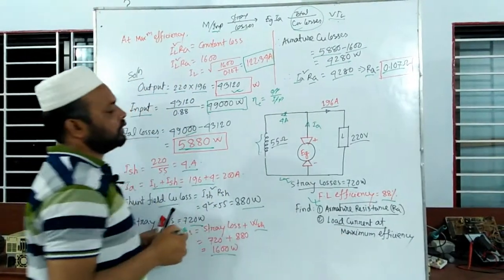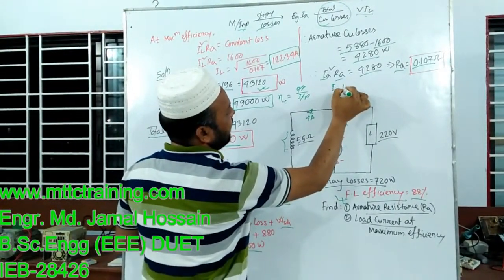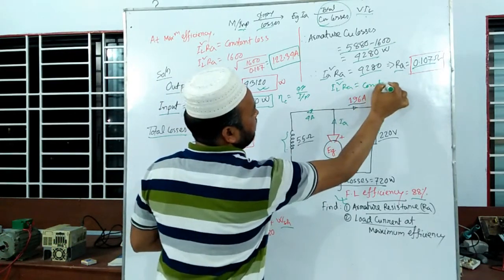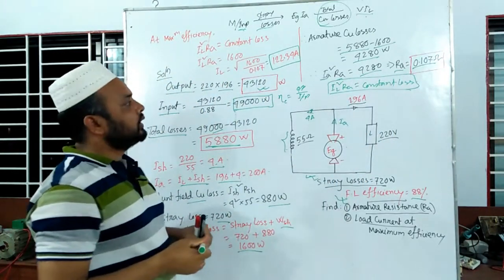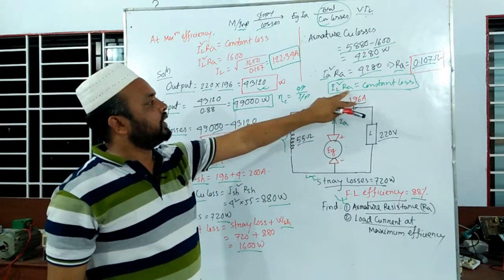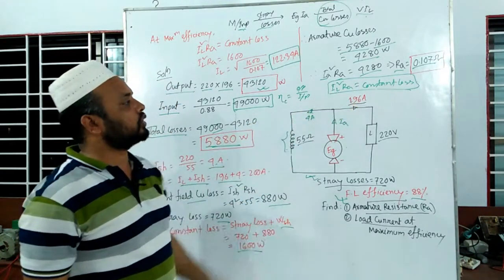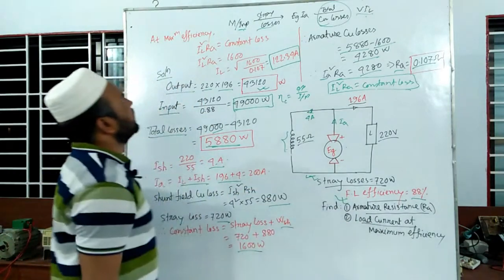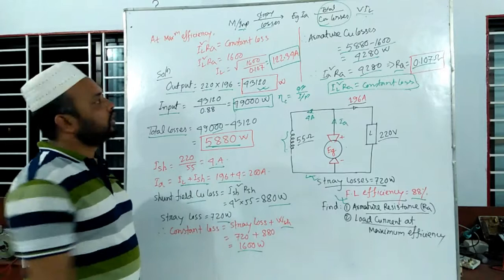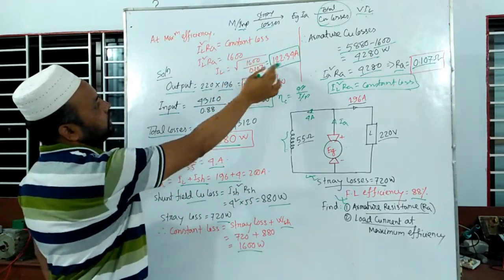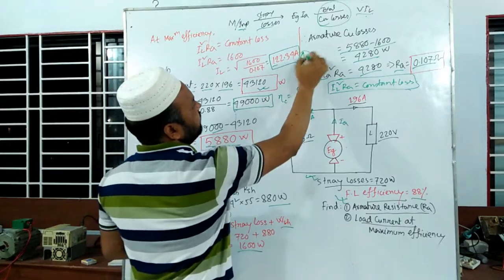The load current is at maximum efficiency. When the load current is at maximum efficiency, it is shown to be lower than the overall full load current. The load current at maximum efficiency is where the constant loss equals the variable copper loss — the amount reduces to near zero. So at maximum efficiency, the constant loss equals the variable loss.